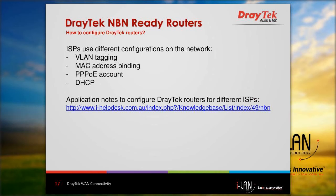When users upgrade to NBN, it is easy to configure DrayTek routers to connect to the network. As an overview, ISPs use various configurations on NBN such as adding VLAN tags to differentiate services like data or voice, MAC address binding to lock devices connected to the network, and PPPoE username/password or DHCP mode where users just need to connect the device to automatically obtain an IP. Application notes for DrayTek users showing configurations for various ISPs are available on the provided link.